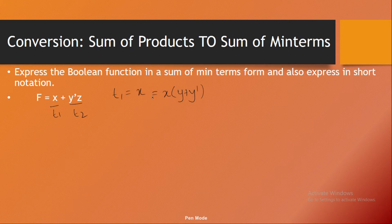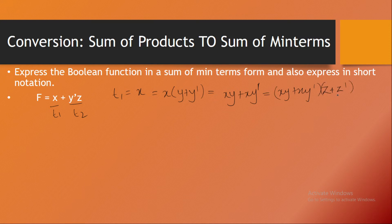So I can replace this term with x into (y plus y-dash). After multiplying inside, that becomes xy plus xy-dash. Now z is missing here, so I multiply by (z plus z-dash), which equals one, so it won't affect the equation. Multiplying through gives us xyz plus xyz-dash plus xy-dash z plus xy-dash z-dash. This is the value for T1.